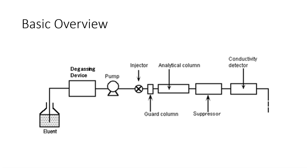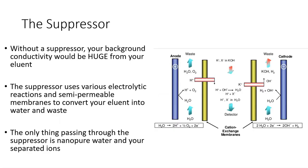They need to make their way to the conductivity detector to be measured, but there's one more very important component before we get there—this is the suppressor. Without a suppressor, your background conductivity would be huge from your eluent. We're using acid and base concentrations in our eluent, and that has a lot of conductivity, so we need to suppress that first.